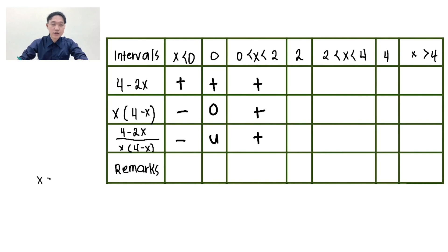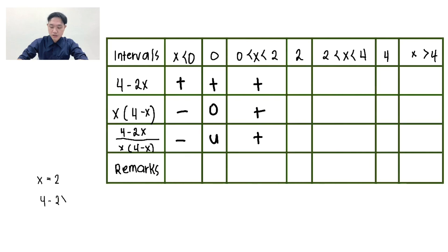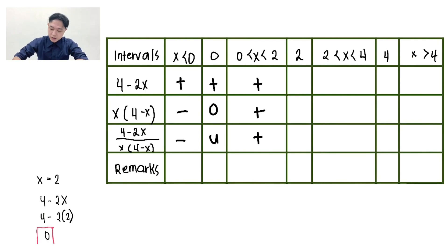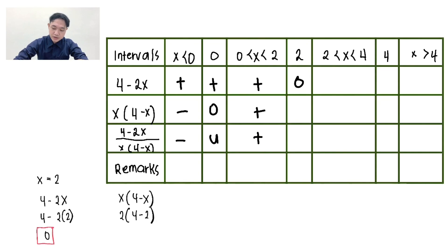For x equals 2, same case as 0 — no interval, so we automatically use positive 2. Evaluate 4 minus 2x: 4 minus 2 times 2. The answer is 0. For the denominator, 2 times the quantity of 4 minus 2. The answer is positive 4. 0 divided by positive is 0.